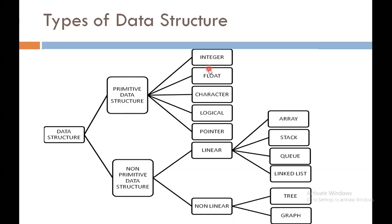The five types of primitive data structure are: integer, float, character, logical, and pointer. These categories are just like the data types of any programming language. The second main category of data structure is non-primitive data structure, which is divided into two parts: linear data structure and non-linear data structure. Linear means all the data items are stored sequentially in a linear method.